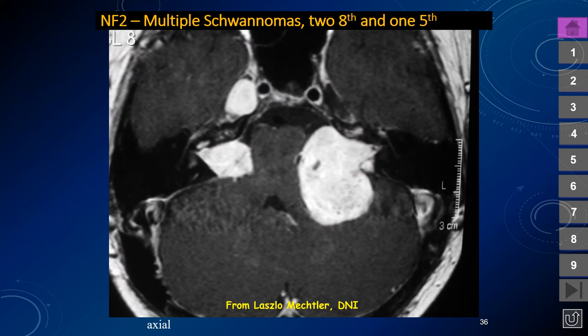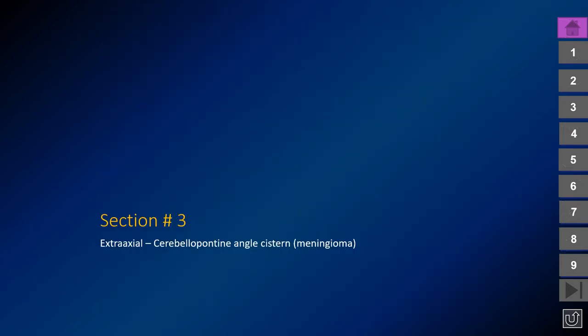Another patient with NF2 shows a very large posterior fossa mass on the left, a smaller posterior fossa mass on the right, and a third schwannoma involving the cavernous sinus arising from the trigeminal nerve. The lateral margins of the cavernous sinus should be straight or slightly concave facing the temporal lobe; when they are bulging convex laterally, you must consider the differential diagnosis for a cavernous sinus mass lesion.